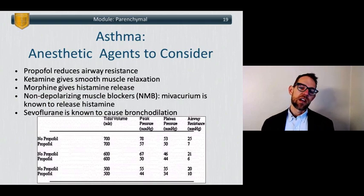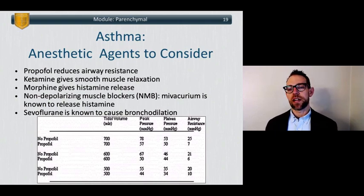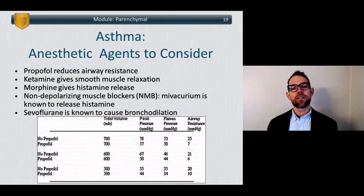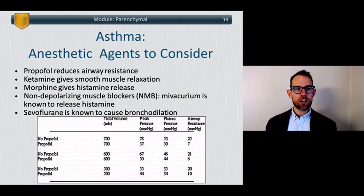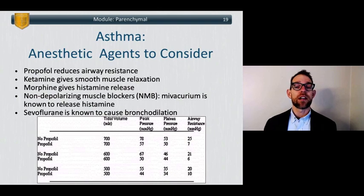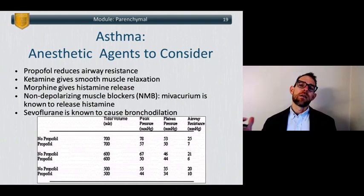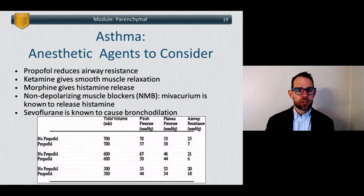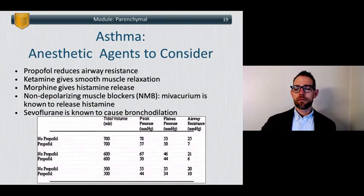Regarding anesthetic agents and their impact on asthma: across all tidal volumes, we see a statistically significant reduction in peak pressure, plateau pressure, and airway resistance by using propofol versus no propofol. Propofol alone reduces airway resistance. Ketamine causes smooth muscle relaxation and is helpful in patients with asthma. Recall that morphine causes histamine release, which can worsen asthma symptoms. Non-depolarizing muscle relaxants — mivacurium being the main one — can also cause histamine release. While desflurane and sevoflurane can both cause bronchodilation, sevoflurane is the optimal choice in patients with asthma or severe COPD for both airway reactivity and bronchiolar relaxation and dilation.